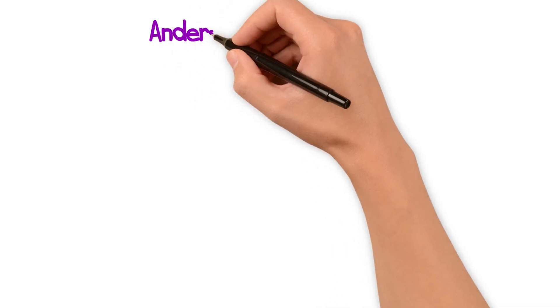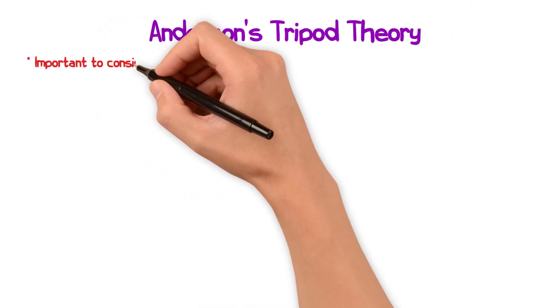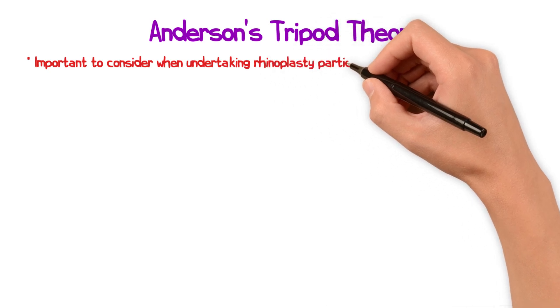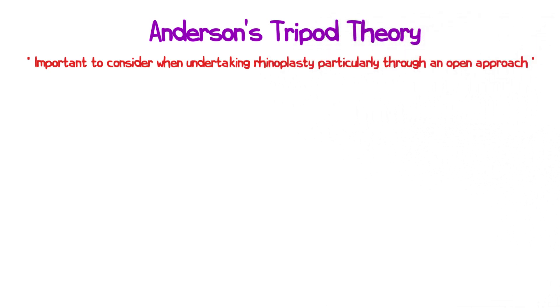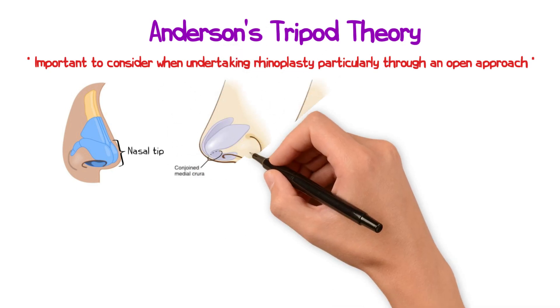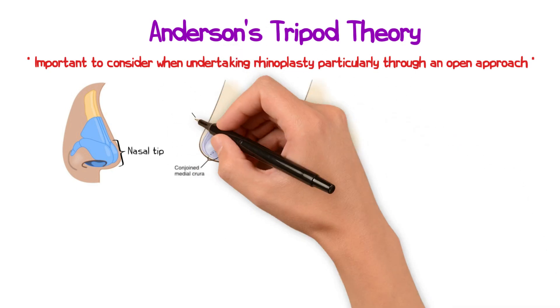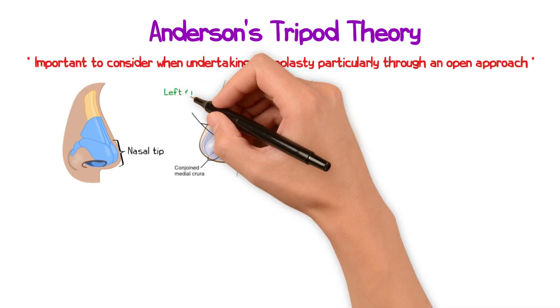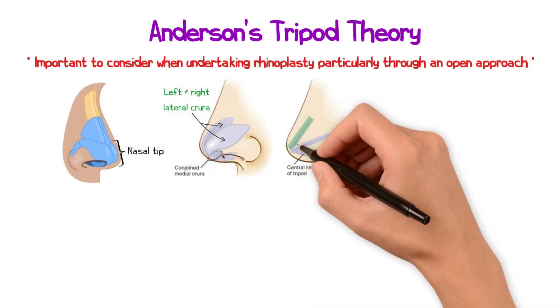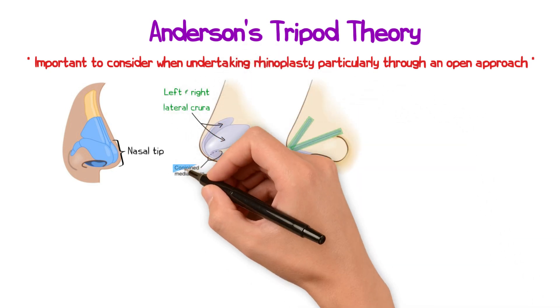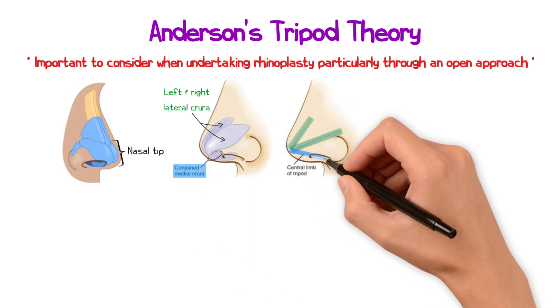What is Anderson's tripod theory? This is a commonly asked question and an important consideration when undertaking rhinoplasty, particularly through an open approach. It refers to the support of the nasal tip, where the lower lateral cartilages make up the different legs of a so-called tripod. The lateral crura of the right and left side respectively make two legs of the tripod, and the conjoined medial crura makes up the third leg.